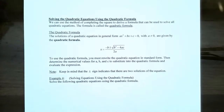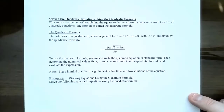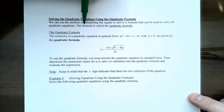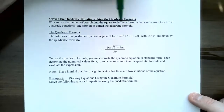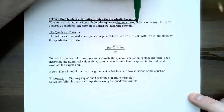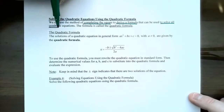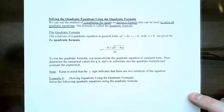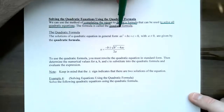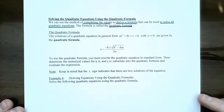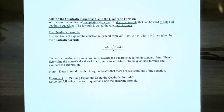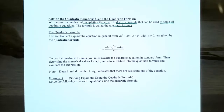Solving quadratic equations using the quadratic formula. It turns out that using completing the square you can derive the quadratic formula from general form, which can be used to solve all quadratic equations. This formula is what's called the quadratic formula. Regardless of what method you want to use — factoring, completing the square, or square root property — if you have a quadratic equation, you can always use the quadratic formula to solve it.